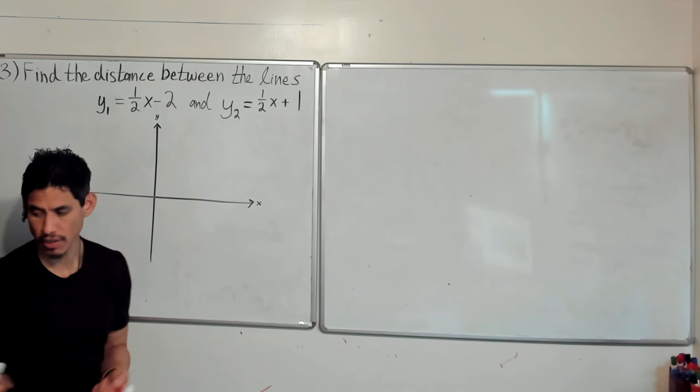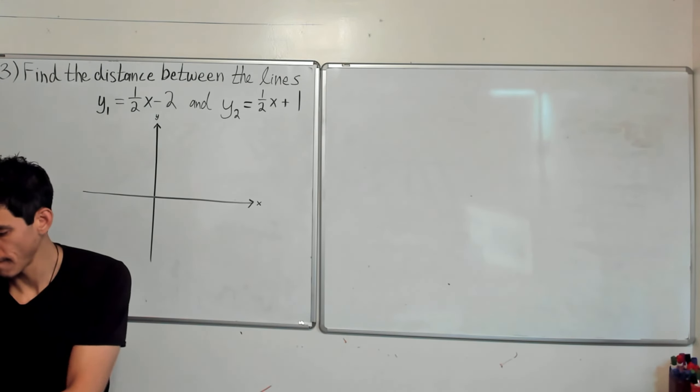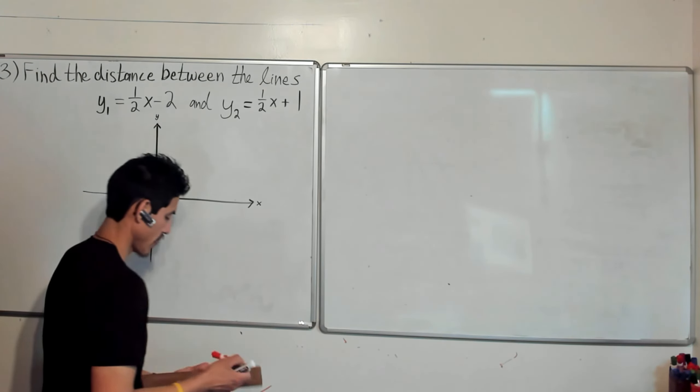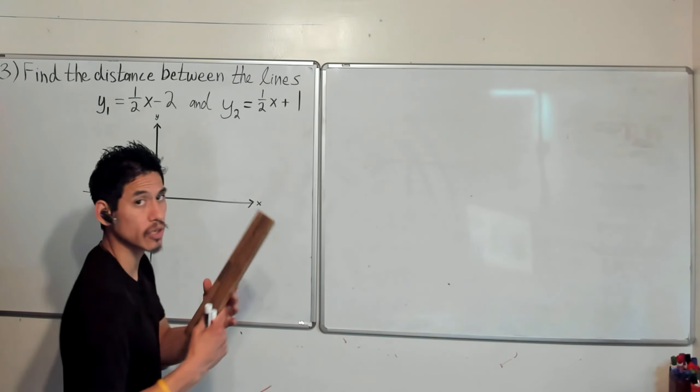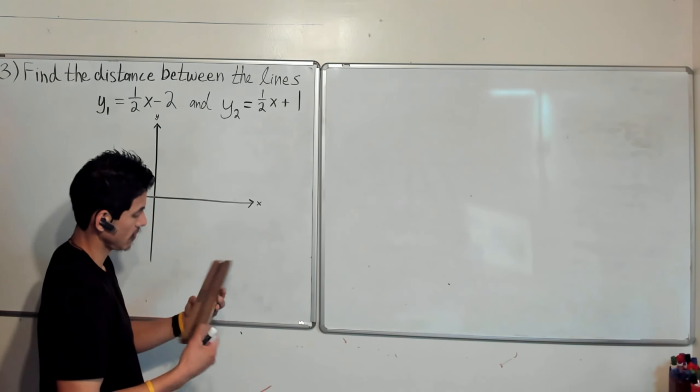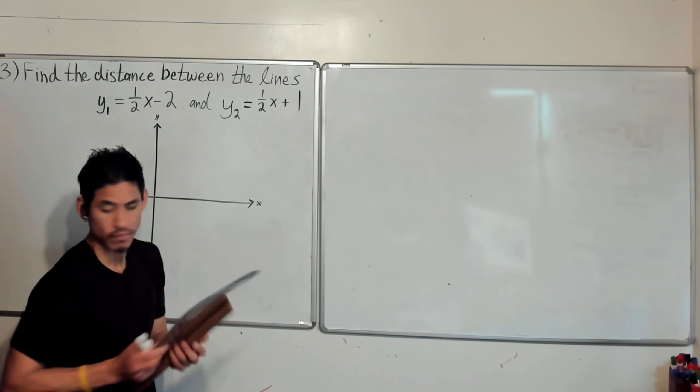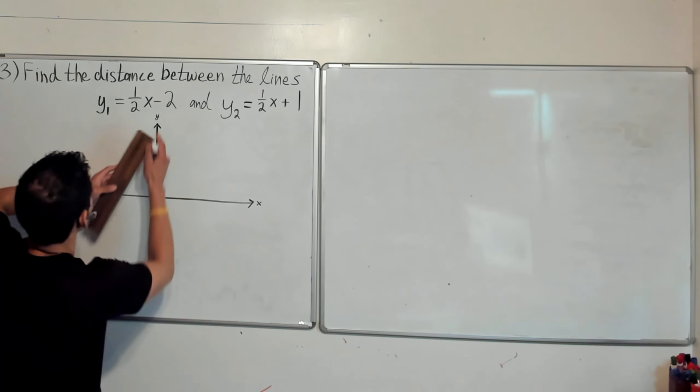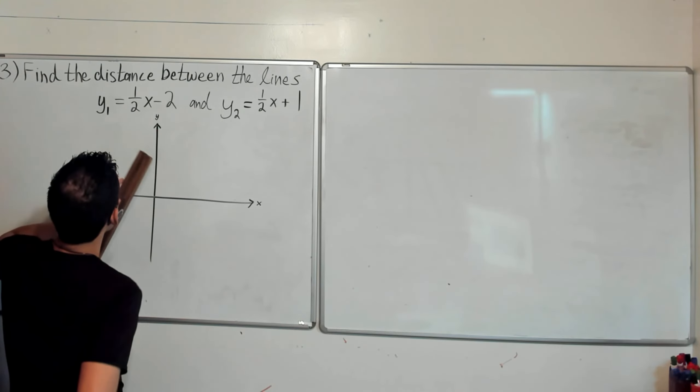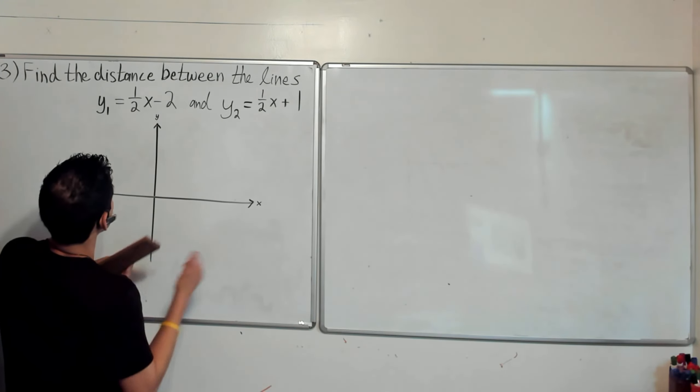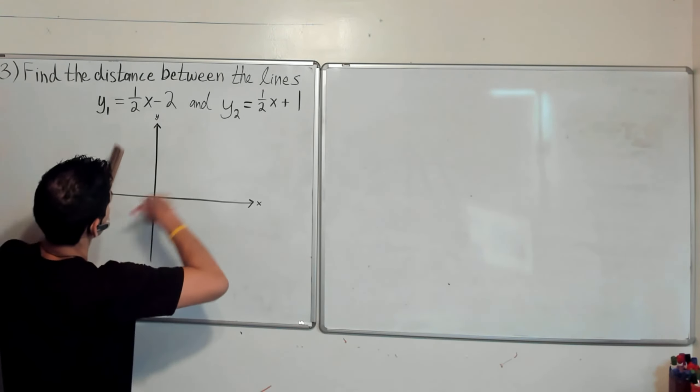Also, you want to know where the intercepts are. So I don't have a ruler, but I have this piece of wood that I got from Australia. It's actually a boomerang holder. So that's going to have to do. So let's graph this.